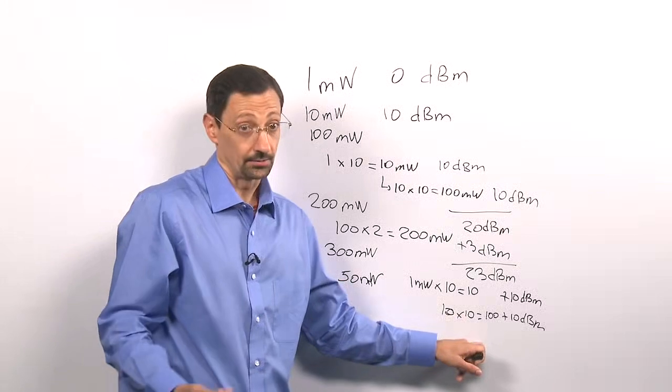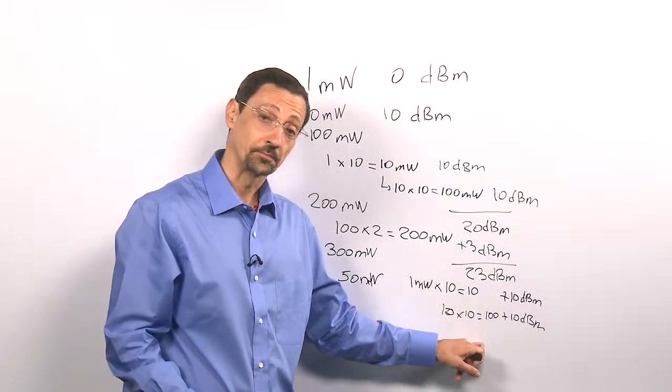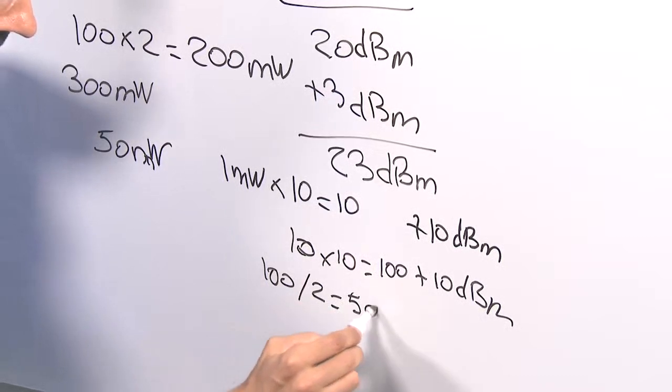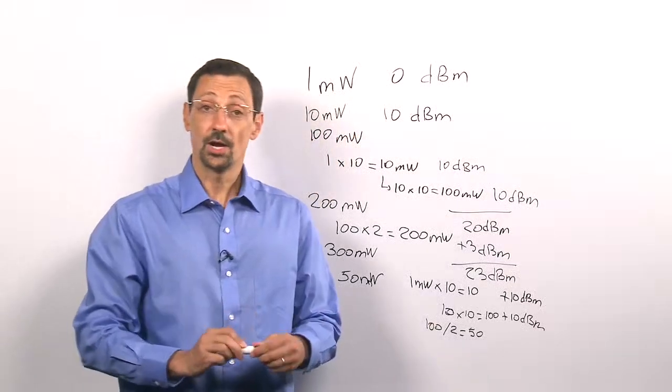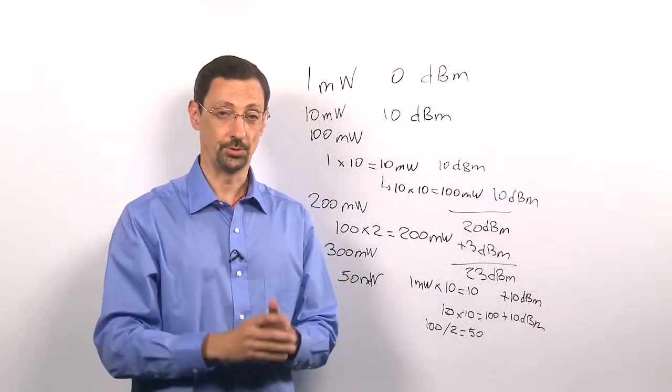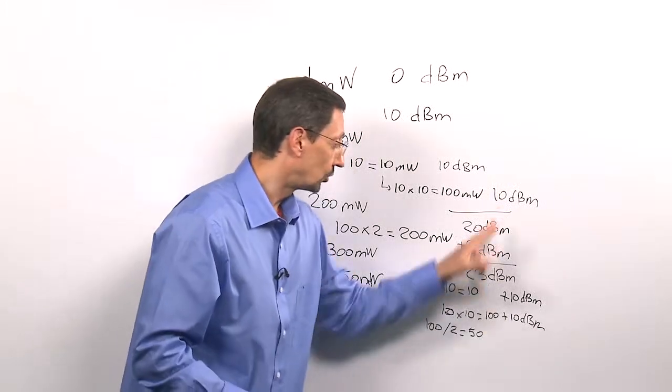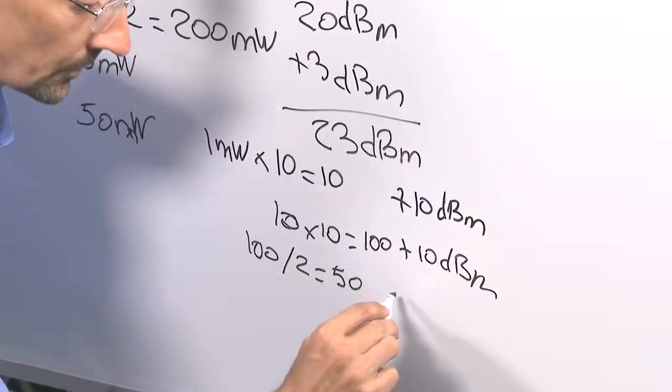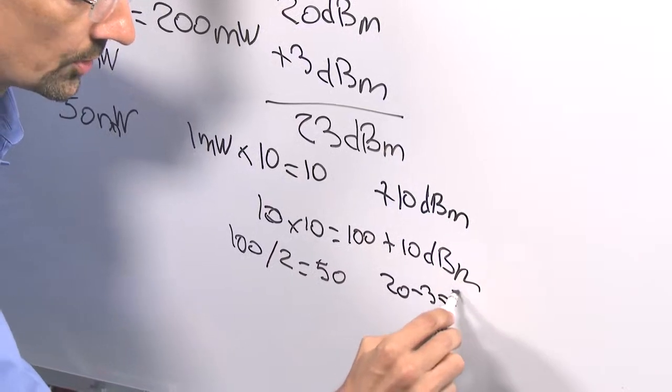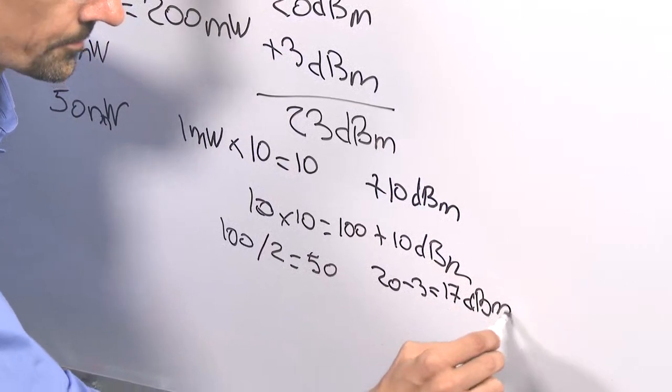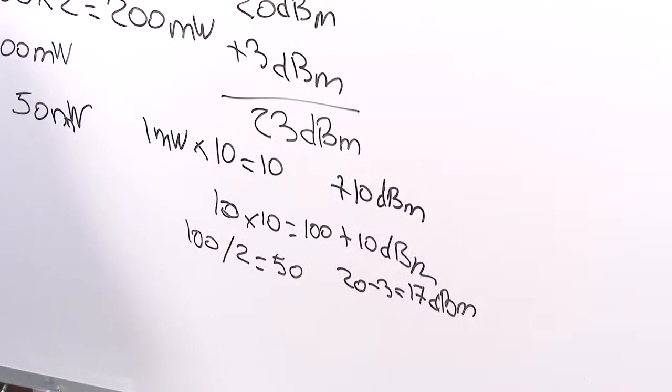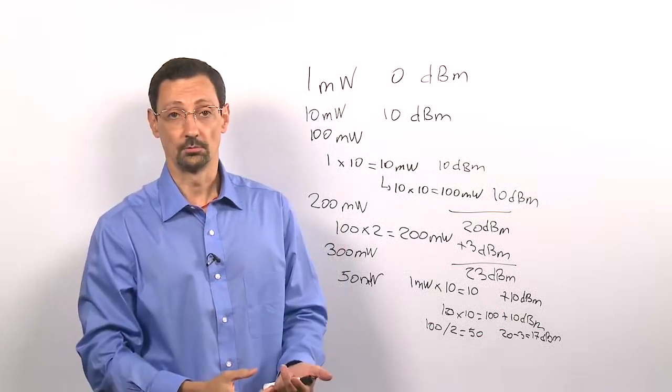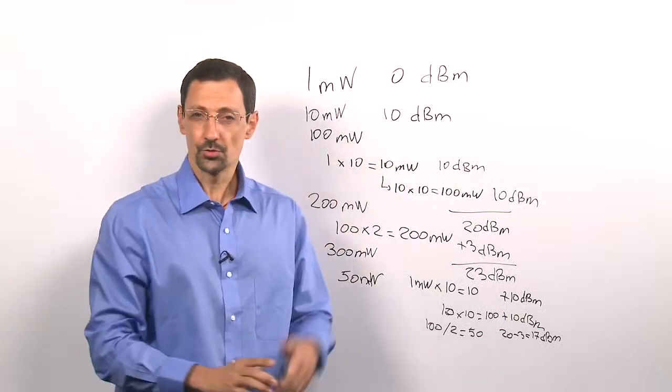And 50 mW is actually half of 100. So you can take 100 and divide it by 2, and that's going to be 50. And you know that every time you divide by 2, you remove 3 dB. So you were at 20 dBm, which is 100 mW, and you remove 3 dB. So that gives you 20 minus 3, which is 17 dBm. So you see, when you have a 5, you can always go to the next 10 and divide by 2, and that's removing 3 dB.